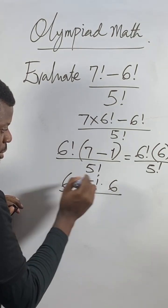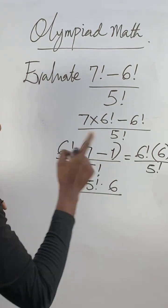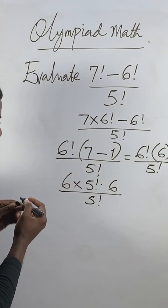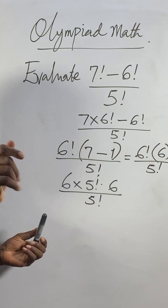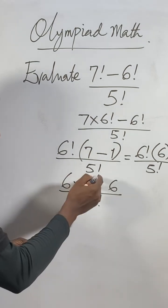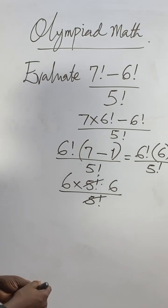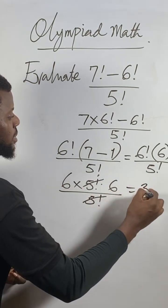Now 5 factorial in the numerator and 5 factorial in the denominator cancel, because one is on top and one is on the bottom. They cancel. So what remains is 6 times 6. 6 times 6 equals 36.